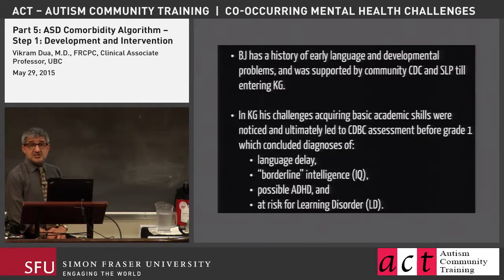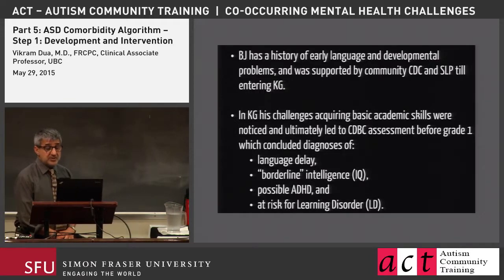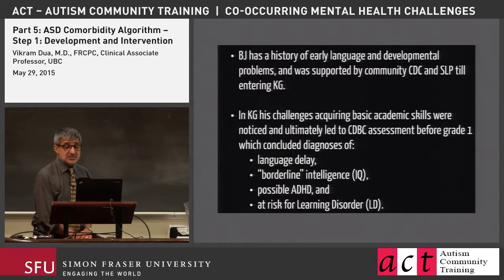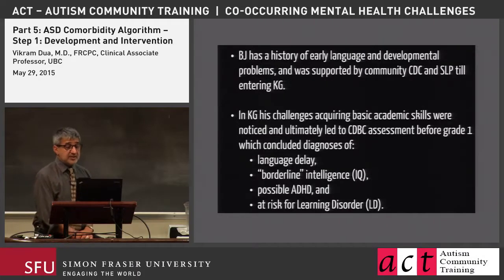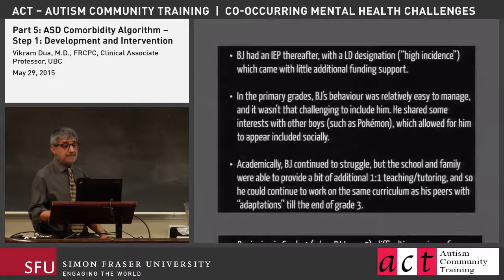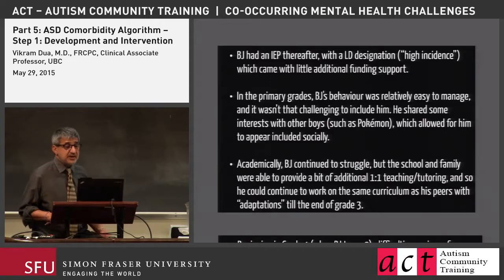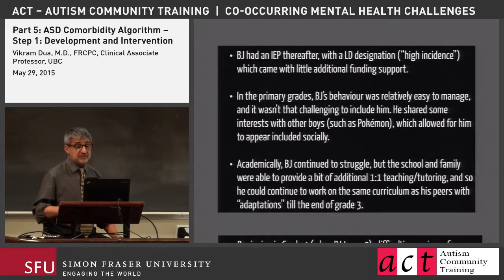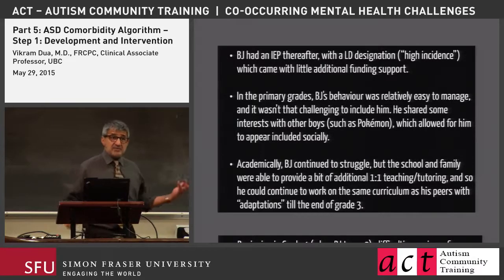In kindergarten, his challenges acquiring basic academic skills were noticed — he was not where he was supposed to be. This led to a referral to CDBC, one of the Sunny Hill provincial programs, before grade one. They concluded a diagnosis of language delay, borderline intelligence, possibly ADHD, and being at risk for a learning disorder. BJ went back to school with this information and got an IEP and a learning disability designation — a high-incidence code that doesn't provide much additional funding.